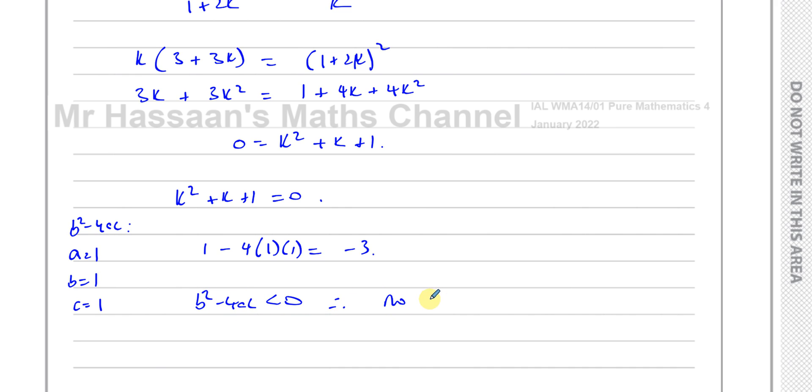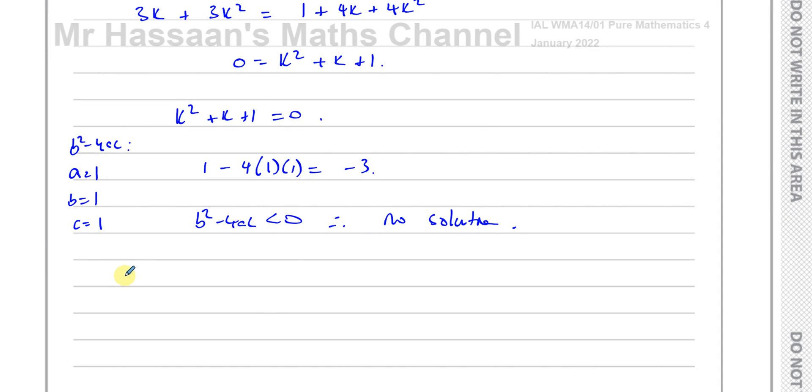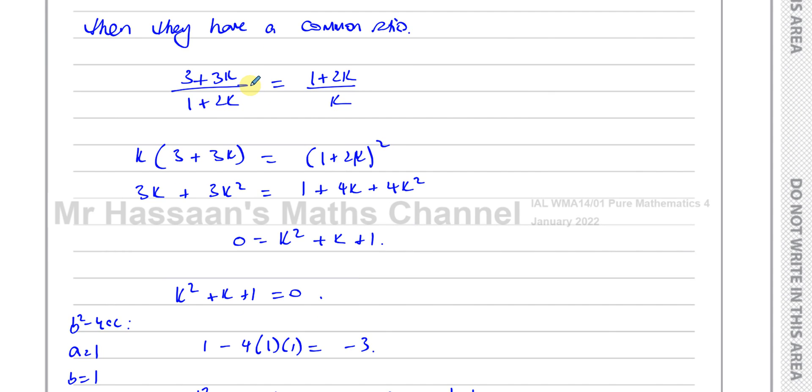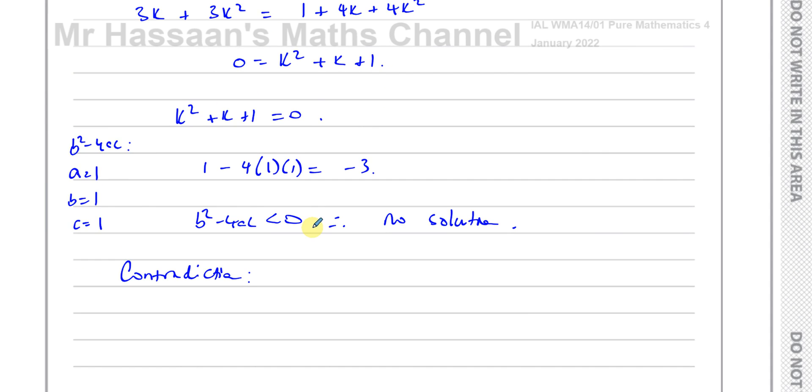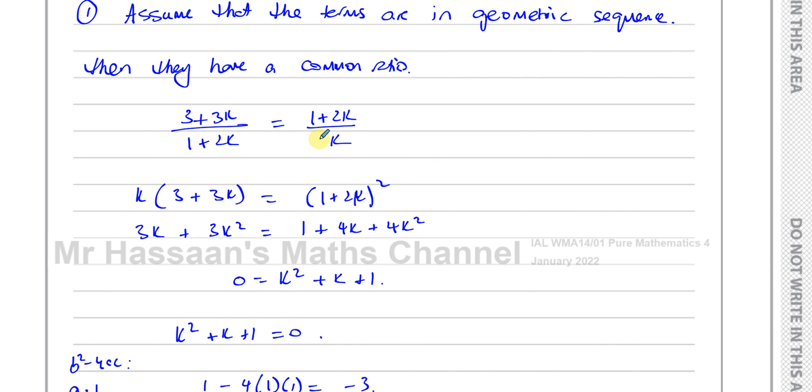So because b squared minus 4ac is less than 0, therefore there's no solution. If there's no solution to this equation, that means this is a contradiction. That's a contradiction because there must be a solution to that equation if they are in geometric series. There will be a value of k which causes them to be in a geometric series, to have a common ratio. As there's no solution to this, that means there's no value of k which causes this to be true.